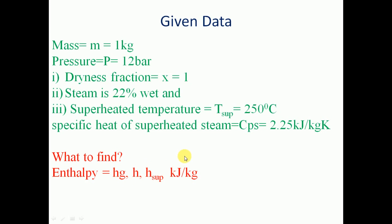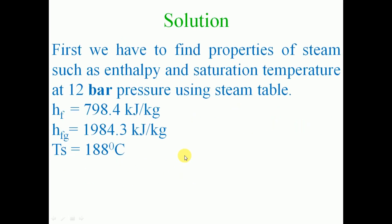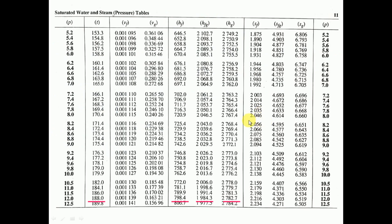For the solution, we first find the properties of steam such as enthalpy and saturation temperature at 12 bar pressure using the steam table. We refer to the pressure-based steam table, that is the saturated water and steam pressure table. The pressure is given from 5.2 bar onwards up to 12.5 bar, and we refer to 12 bar. The first column T gives the saturation temperature as 188 degree Celsius.